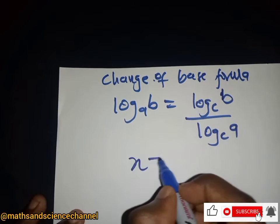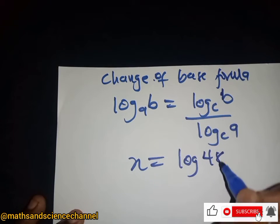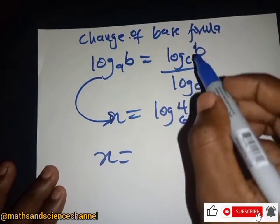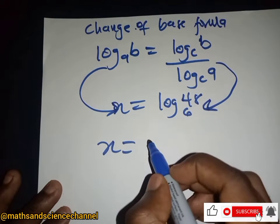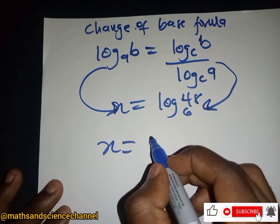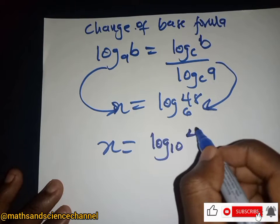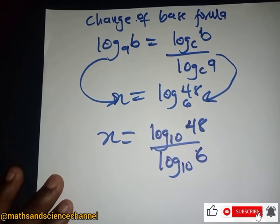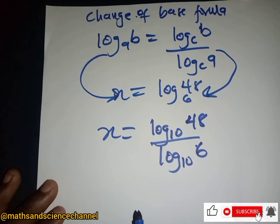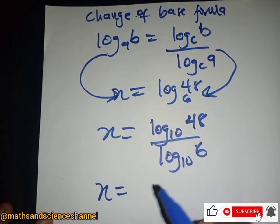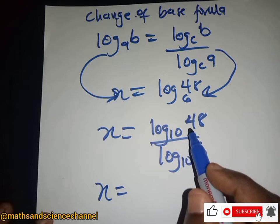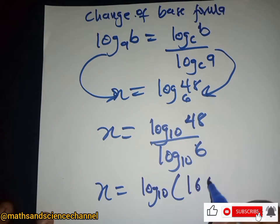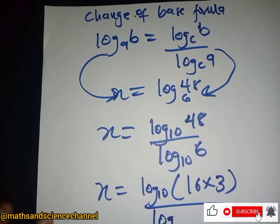Since we have x equal to log base 6 of 48, changing the base gives us log base 10 of 48 divided by log base 10 of 6. Now we can separate and decompose these. 48 can be written as 16 multiplied by 3, and 6 can be written as 2 multiplied by 3.